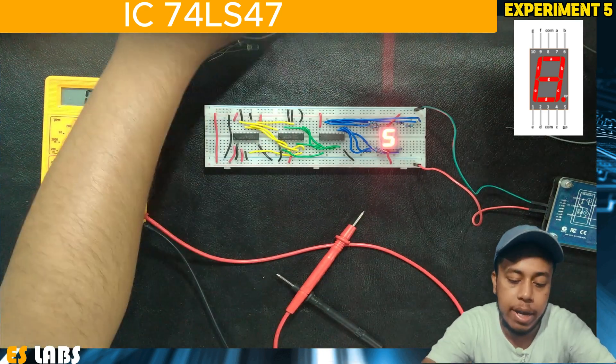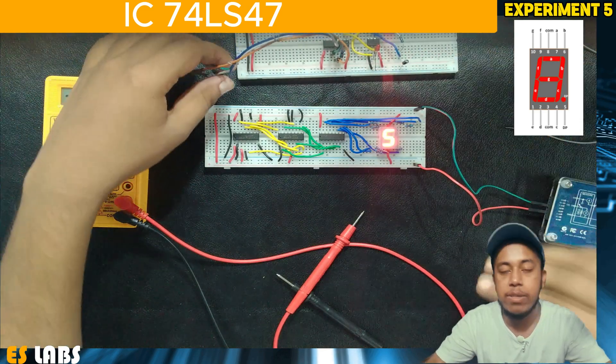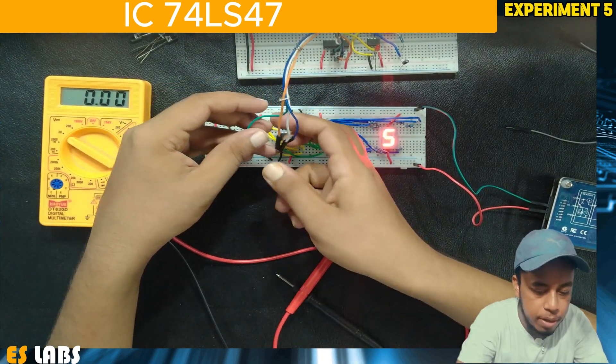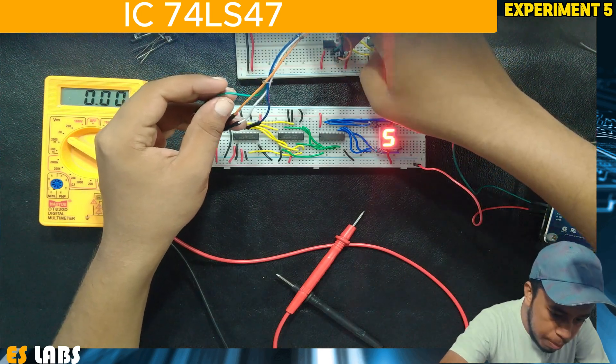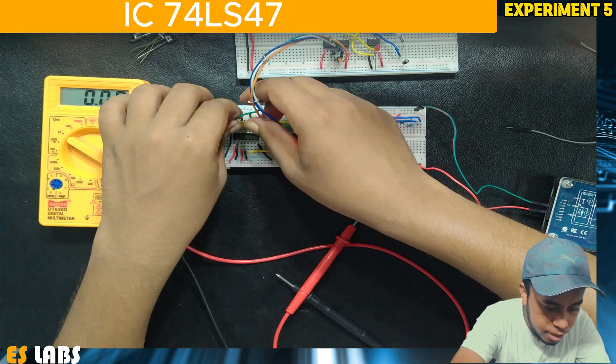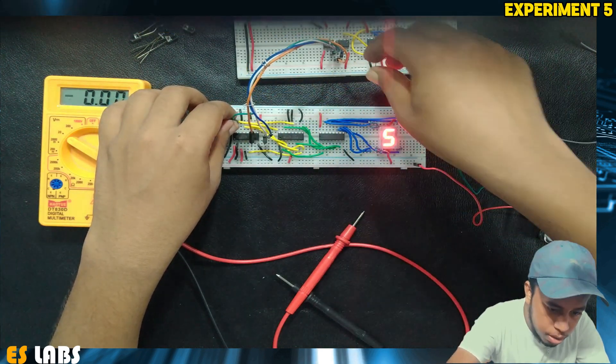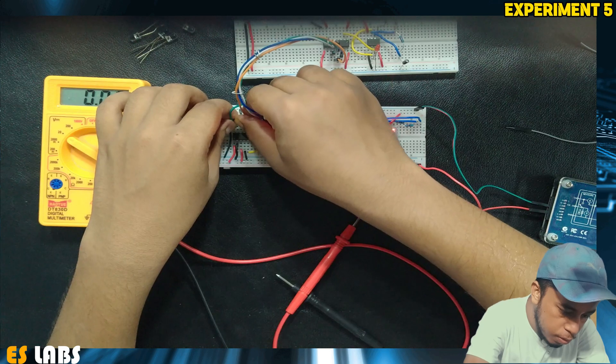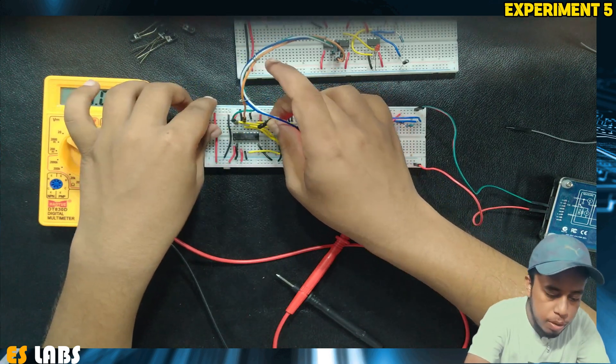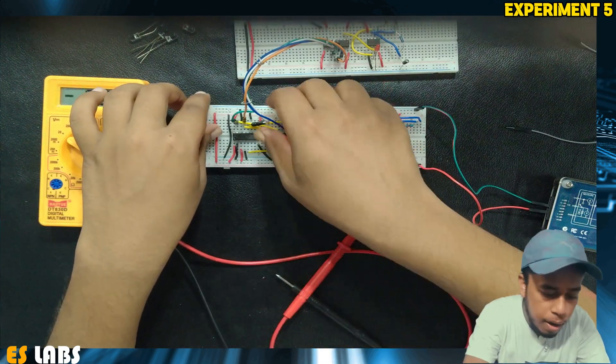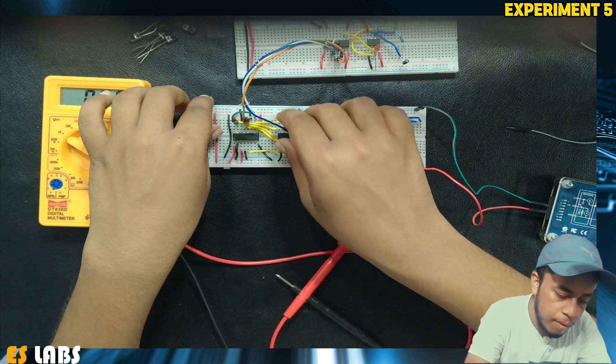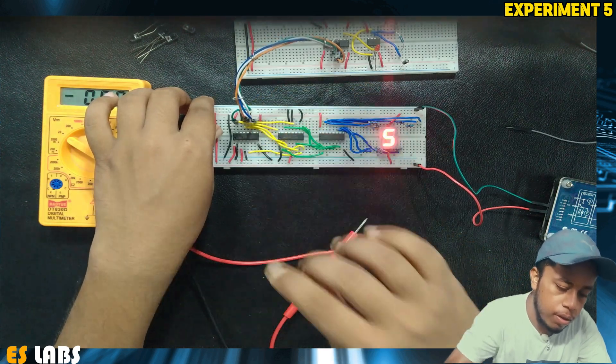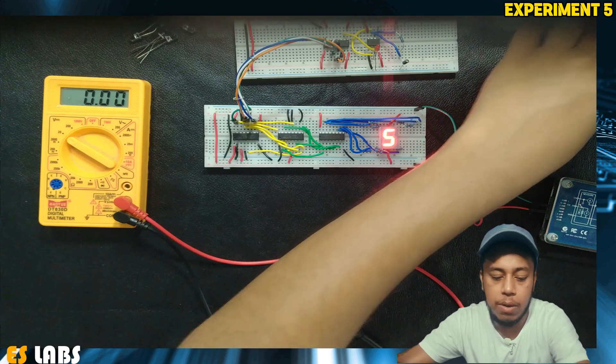Now we take the counter that we designed in experiment 3 and give input. Pin number 11 which is green goes to A3, pin 12 goes to A2, pin 13 goes to A1, and pin 14 goes to A0. Now we power up the counter.